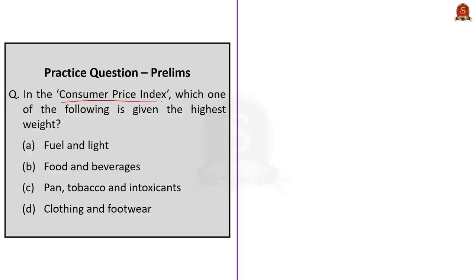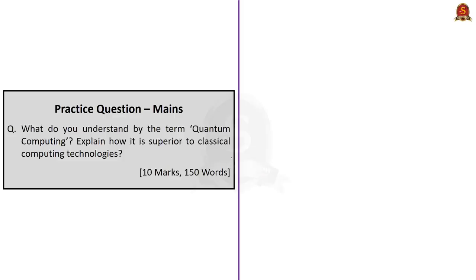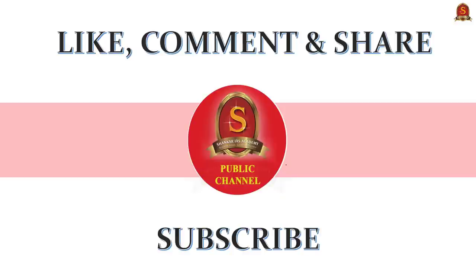We can arrive at the correct answer, Option C, which reads: Decreased money circulation helps in controlling the inflation. We should know that RBI increases the bank rates and statutory liquidity ratio to reduce money supply in the market, which in turn tames demand and controls inflation. Now see this practice question: In the consumer price index, which one of the following is given the highest weight? Remember, as we have seen, food and beverages is given the highest weightage, and the lowest weightage is given to pan, tobacco and intoxicants. We have a mains practice question related to quantum computing. Please write your answers and post it in the comment section. Our feedback will be given in a reasonable time frame. We have come to the end of analysis of all the news articles taken up for today's discussion and discussion of practice questions. If you like this video, please press the like button, comment, share, and do subscribe to Shankar IAS Academy YouTube channel for more videos and updates related to civil service preparation. Thank you.